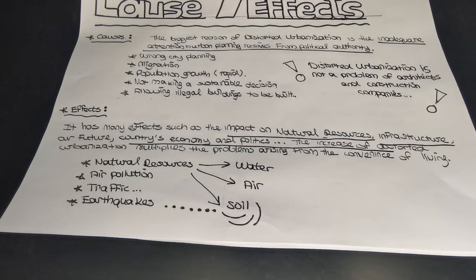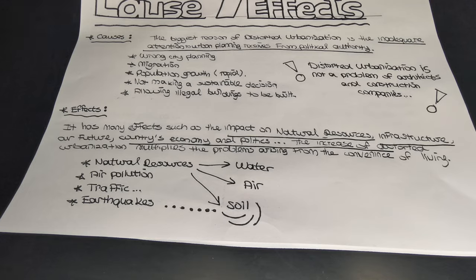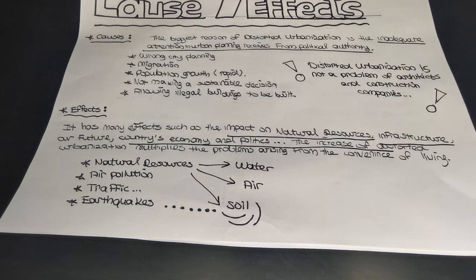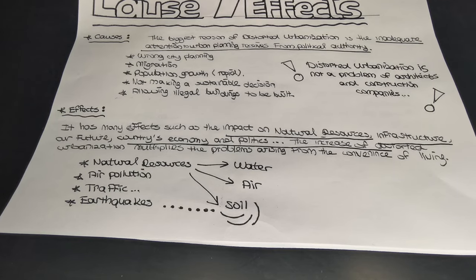I want to give a significant addition about the causes of distorted urbanization. Distorted urbanization is not a problem of architects and construction companies, because architectural companies have to work in line with published contract rules. Therefore, architectural companies can't contribute to the planned development of the city. If there is no power or planning in the region, the contracts related to city planning also operate according to that. As a result, the city grows in an unplanned manner, and the unit responsible is the city planning department or the Ministry of Environment and Urbanization.